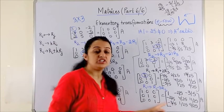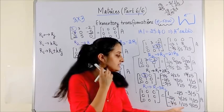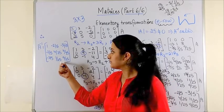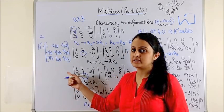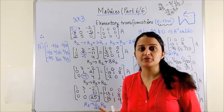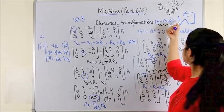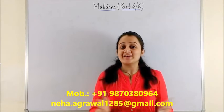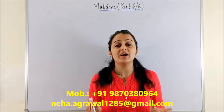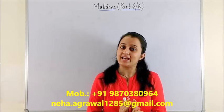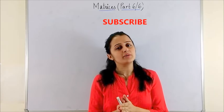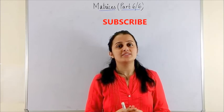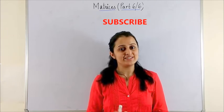We have now converted our initial matrix into the identity. The new matrix on the right becomes the inverse. Conclude your answer by stating: therefore, A inverse equals this matrix. Please review the entire question once again. For further questions, follow this same pattern. This brings us to the end of this video. I hope you all understood how to apply elementary row transformations. For more questions on this topic, please leave a comment below. I will see you with elementary column transformations. Until then, bye-bye.